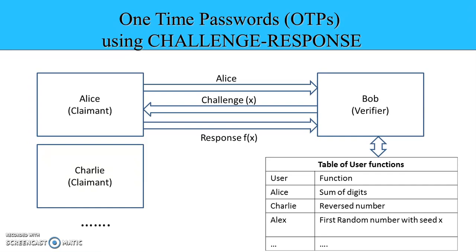I expect the students to implement this kind of one-time password scheme using challenge-response in this manner. On this side we have several users who are trying to authenticate themselves to server Bob. This server Bob will store a pre-decided table of user functions — different functions for each user. For example, for Alice it stores the function 'sum of digits'; for another user Charlie it stores 'reverse of number', and so on for various users. This implementation can be done in any programming language of the student's choice.